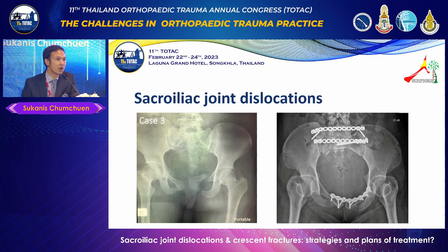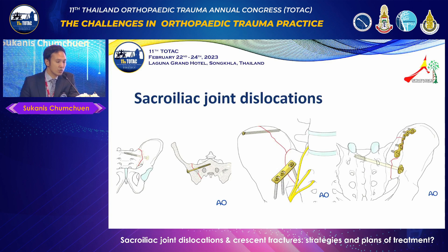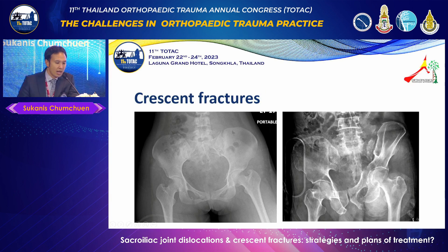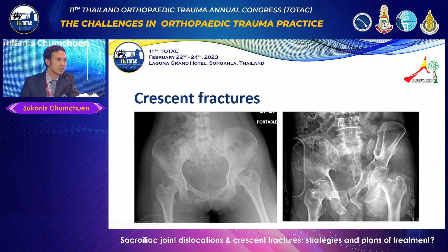Today I will focus on crescent fracture, because some may not know this terminology. For SI joint dislocation, we have screw fixation or anterior fixation of the SI joint, and also on the posterior we can add plate fixation, especially for crescent fracture. Crescent fracture is a posterior fracture where the posterior ileum is still attached to the sacrum with a strong ligament. The posterior SI ligament is very strong, so it remains attached to the axial skeleton. It may be simple, or it may present with vertical translation.